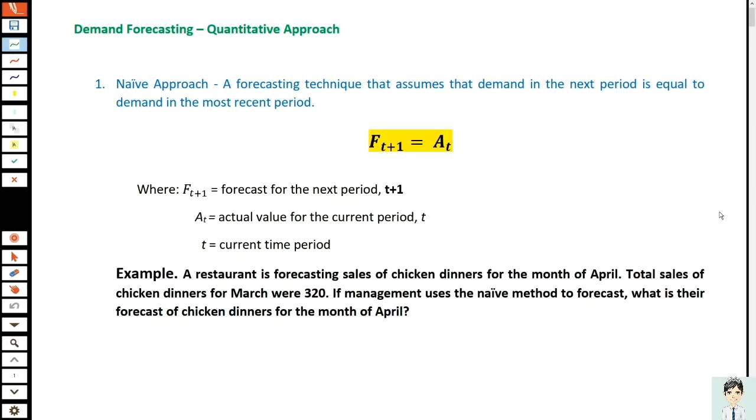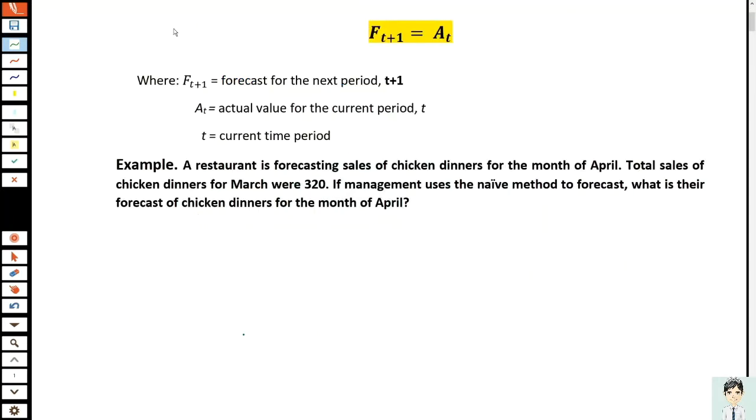A restaurant is forecasting sales of chicken dinners for the month of April. Total sales of chicken dinners for March were 320. If management uses the naive method to forecast, what is the forecast of chicken dinners for the month of April? Given the following: